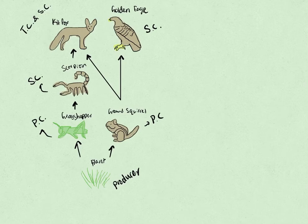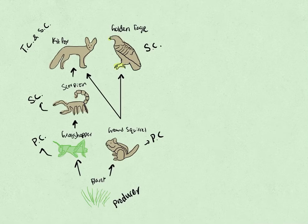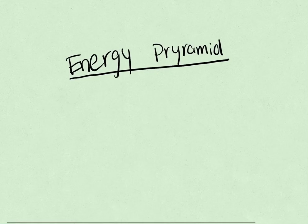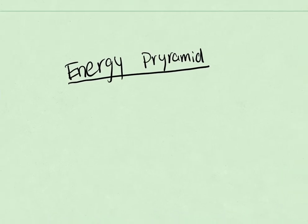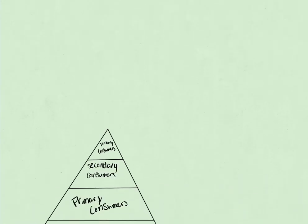Now, to represent the energy that's being transferred from one organism to the next, we use something called the energy pyramid. This is a representation of all the energy that is present in a food chain or a food web, and it's to show how the energy is progressing. So let's take a look at it.